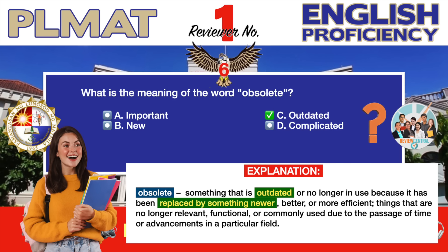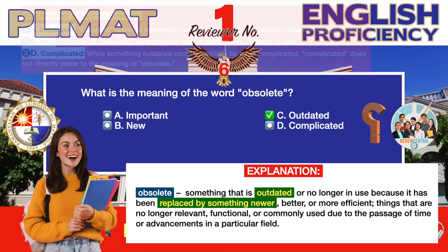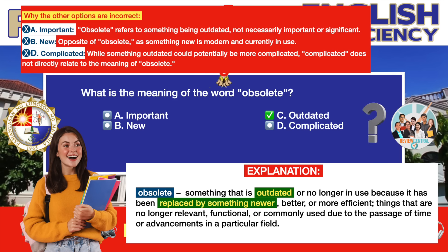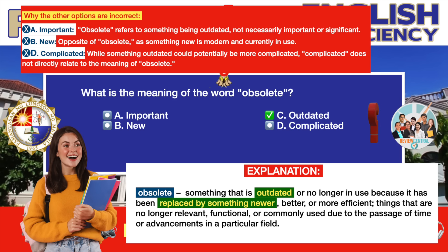For example, old technology such as floppy disks or VHS tapes are considered obsolete because more advanced technologies, like USB drives and streaming services, have replaced them.